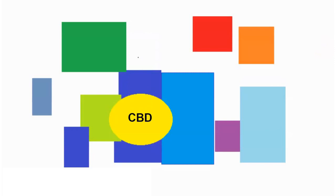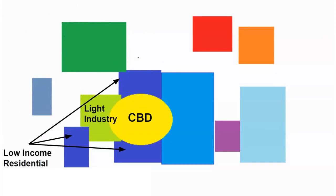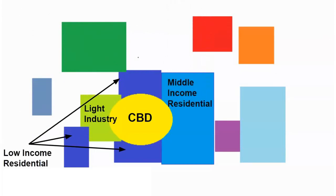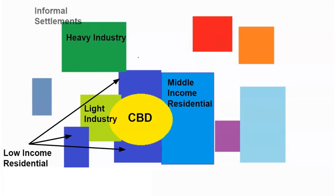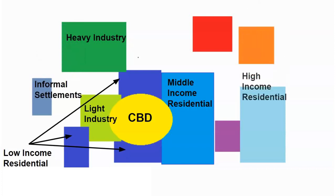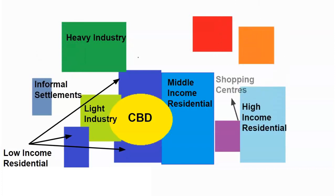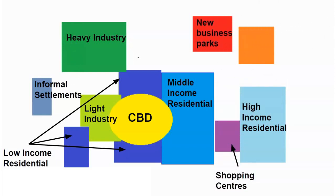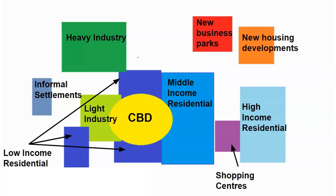Looking at this land use zone model, we've got the CBD — the central business district — in the middle. You'll find light industry and low income residential housing, then middle income residential housing, heavy industry, informal settlements, high income residential, shopping centers, places of business, and usually new business parks and new housing developments on the outer edges. These should be familiar to you in your own cities.